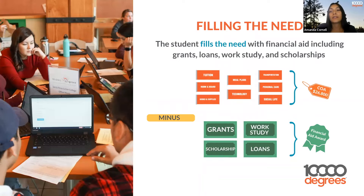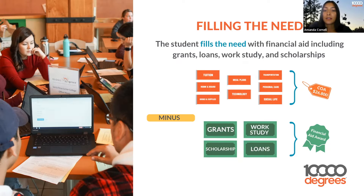Filling the need: after you find out your cost of attendance — say $26,000 — you then fill that amount with the grants, scholarships, work study, or loans you receive. The student fills the need with financial aid, and then you figure out what is left for you to supply after that.